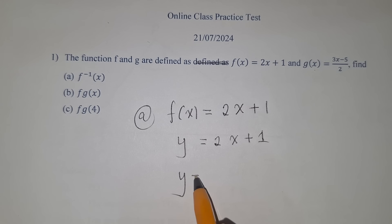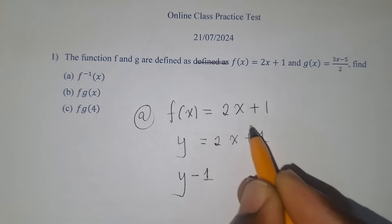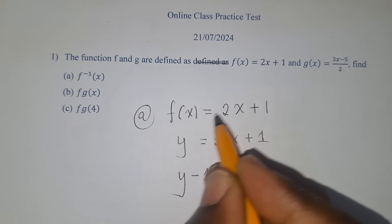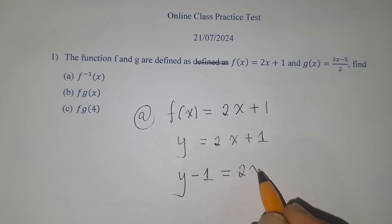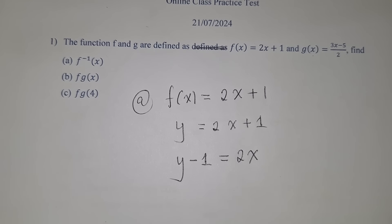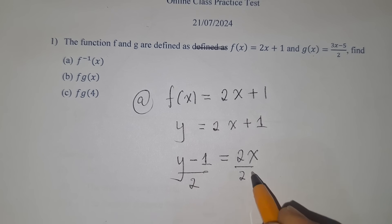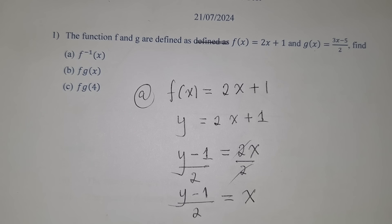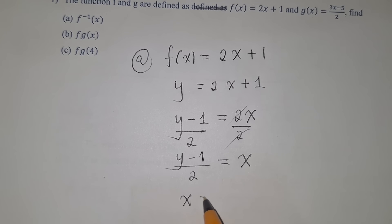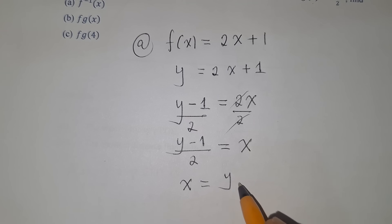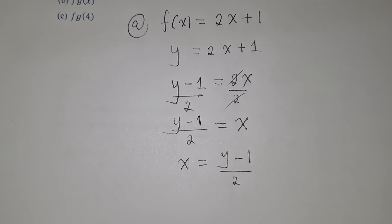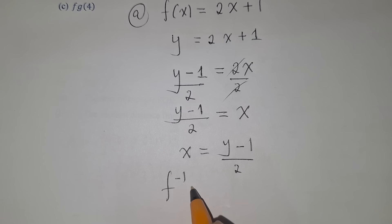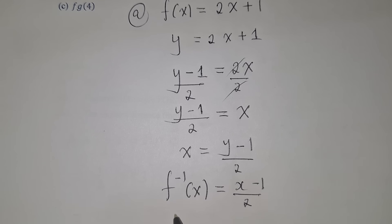Maintain the y, and move the +1 across the equal sign so it becomes −1, giving y − 1 = 2x. Divide both sides by 2 so that x is alone. We get x = (y − 1)/2. Therefore f inverse of x = (x − 1)/2. This is our answer.